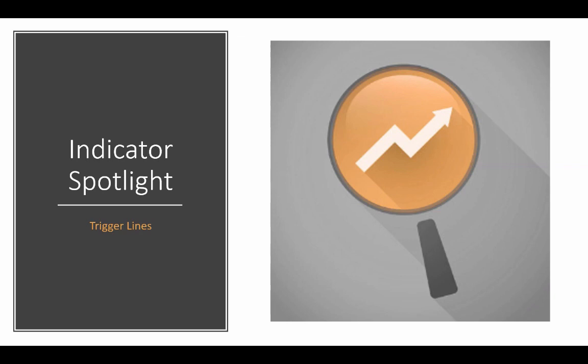So in this episode, we're looking at the Trigger Lines, which is a trend filter comprised of a fast versus slow line comparison.